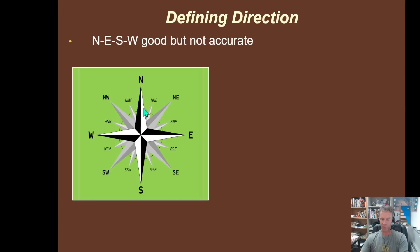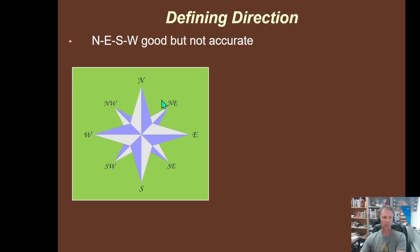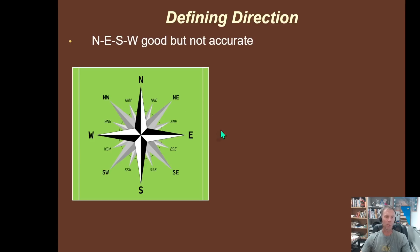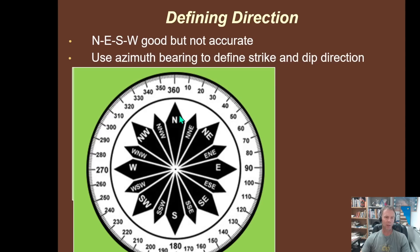I mean, what's the difference between north and northeast? Well, it's a 45-degree angle, right? It's a 45-degree range of values between north and northeast. So we need a better way to do it. And so the way we do this is by using an azimuth.